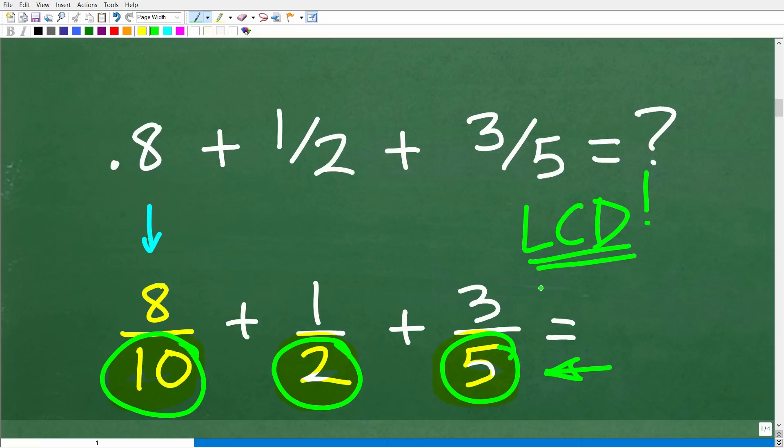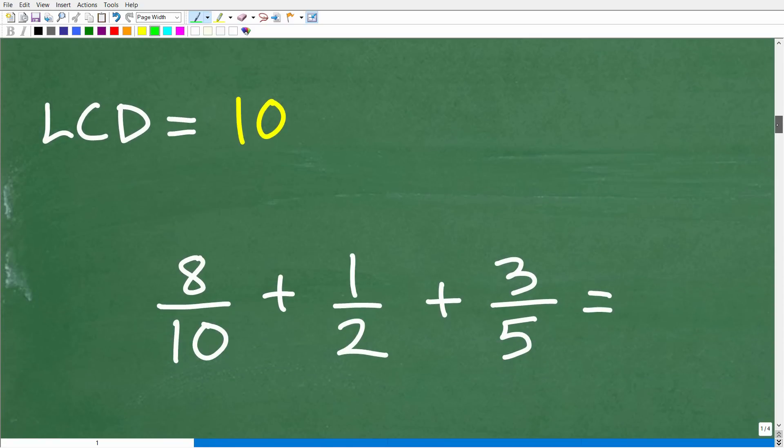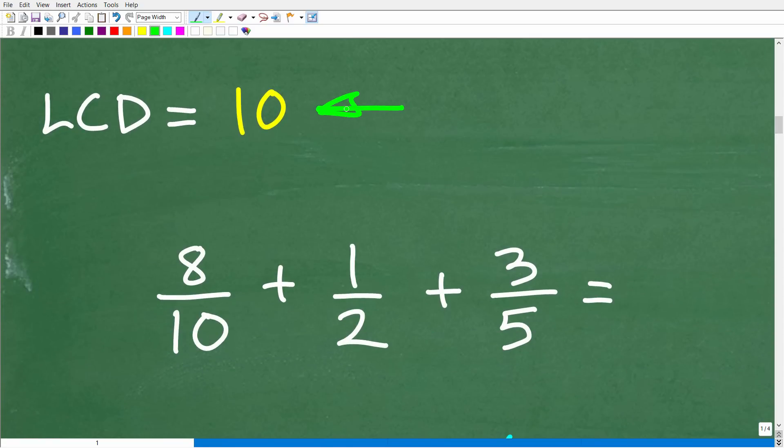What is the LCD here? Well, hopefully you're saying, Mr. YouTube Math Man, that is so easy. The LCD is 10. That is correct. That means that all of our denominators here need to be 10.